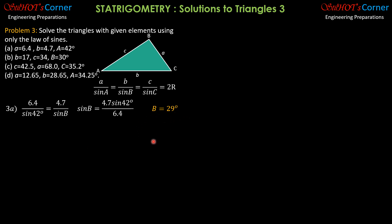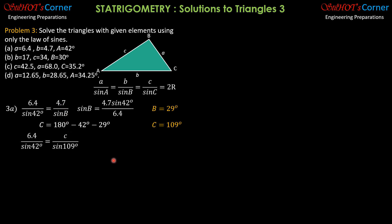Having found angle B, we solve for angle C using the fact that all angles of a triangle sum to 180 degrees. So angle C = 180° − 42° − 29° = 109 degrees. Angle C is obtuse, so we expect side C to be the longest side. By the sine law: C = (6.4 × sin 109°) / sin 42°, and using a calculator, C = 9.0 units to two significant figures.